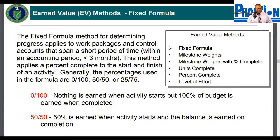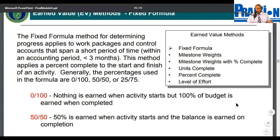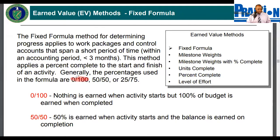The fixed formula method applies to work packages and control accounts that span a short period of time within an accounting period — less than three months. This method applies a percent complete to the start and finish of an activity. Generally, the percentages used in the formula are 0/100. That means you cannot claim any of the earned value until 100% of the task is done. 50/50 means you can claim 50% of the earned value the moment the task starts, but you do not claim the other 50% until the task is done.